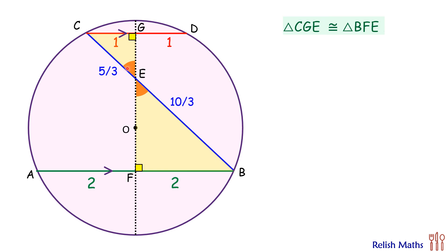If we apply the Pythagorean theorem in triangle CGE, the value of GE will be 4 by 3. Same way, by Pythagorean theorem in triangle BFE, the value of EF will be 8 by 3 centimeters.